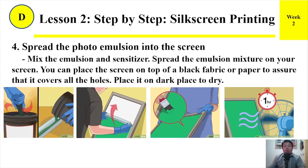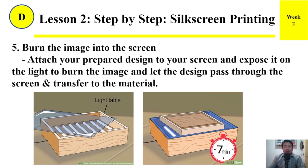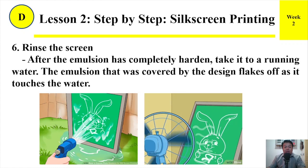Step 4: Spread the photo emulsion into the screen. Mix the emulsion and synthesizer, then spread the emulsion mixture on your screen. You can place the screen on top of a black fabric or paper to assure that it covers all the holes. Place it in a dark place to dry. Step 5: Burn the image into the screen. Attach your prepared design to your screen and expose it to light to burn the image, letting the design pass through the screen and transfer to the material. Step 6: Rinse the screen. After the emulsion has completely hardened, take it to running water. The emulsion that was covered by the design flakes off as it touches the water.